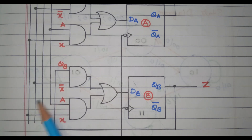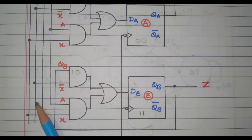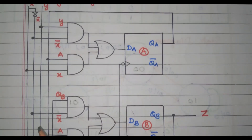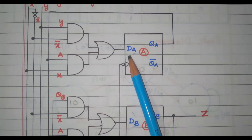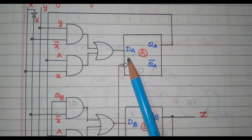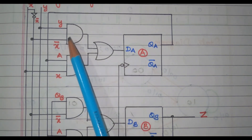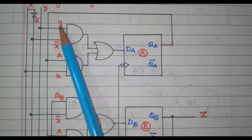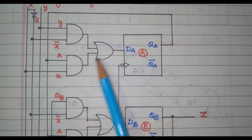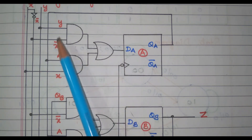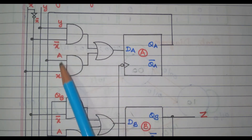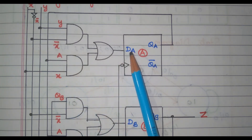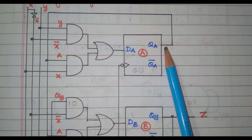So we have five data signals available: X, X-bar, Y, QA, QB. First we will see DA, the expression for A, the first flip-flop. So this AND gate gives X-bar into Y. This is X into A. Both are added together, so DA is nothing but X-bar·Y plus X·A, that is given to DA. So that we got QA.